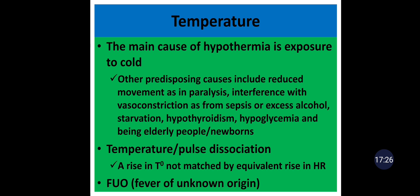Fever of unknown origin is fever of 38.3°C or more that lasts at least 3 weeks without a known etiology despite intensive evaluation and diagnostic testing. To declare fever of unknown origin, the patient should not be immunocompromised and certain investigations should have been done, such as CBC differential, ESR, CRP, organ function tests, urinalysis, blood culture, urine culture, antinuclear antibody, rheumatoid factor, abdominal ultrasound, chest x-ray, liver biopsy, skin test, and so on.